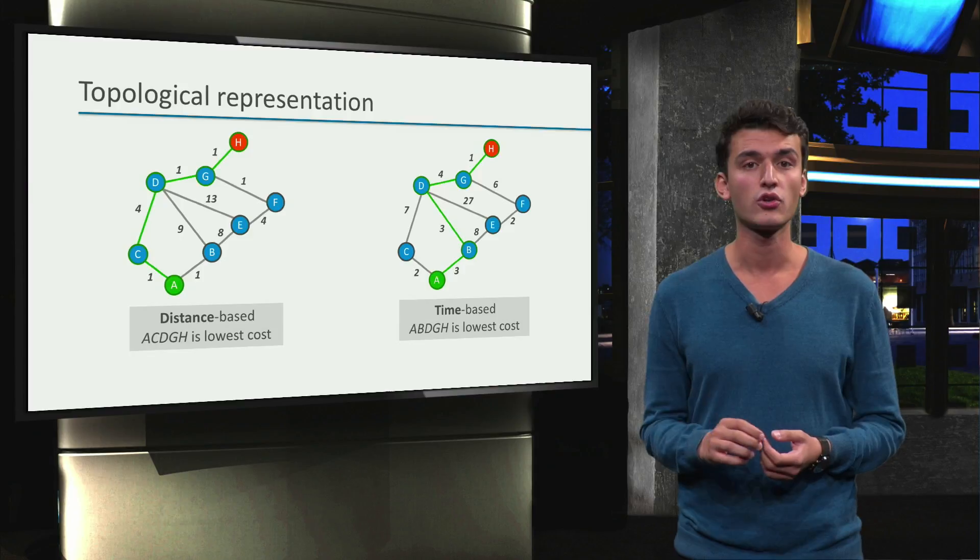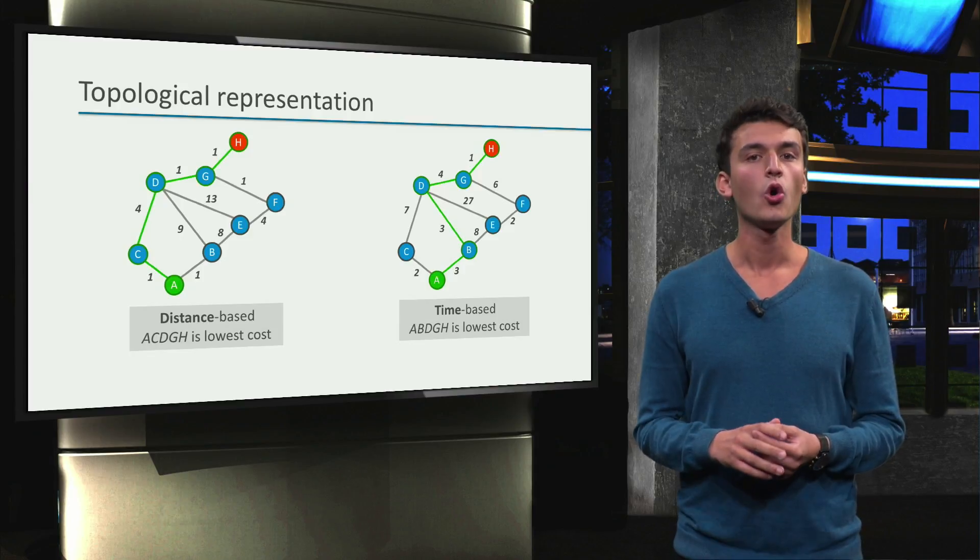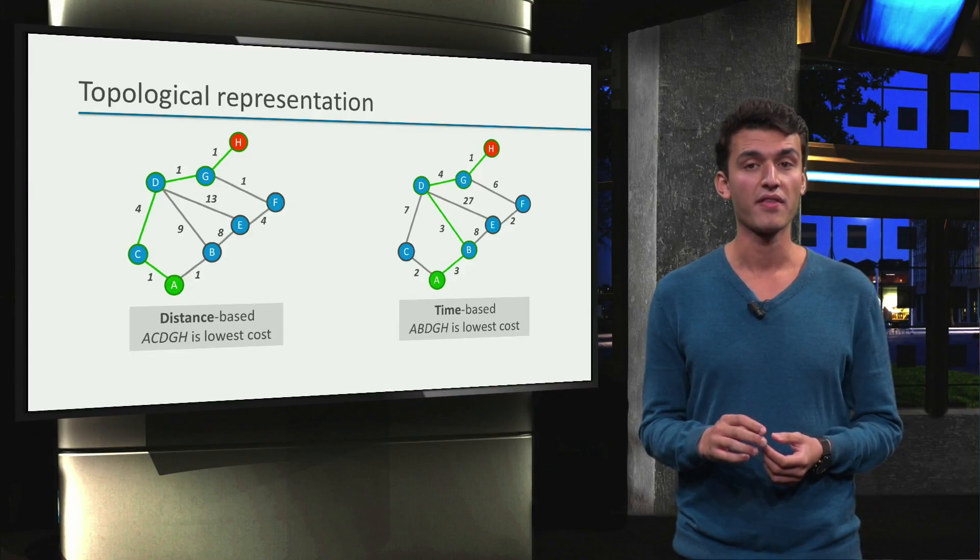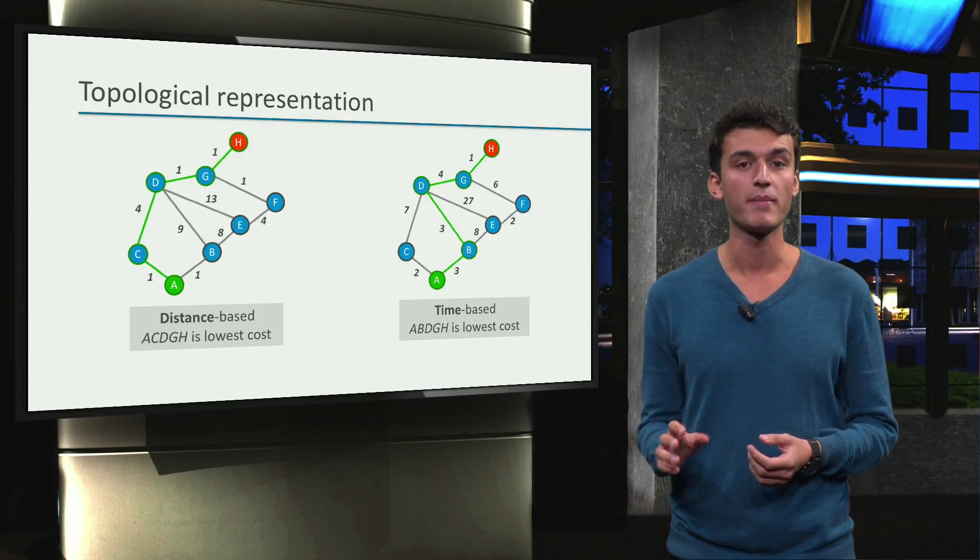It could be shorter but maybe crowdier or has a lot of stops for example. We see that in the second case path A, B, D, G, H is the best choice.